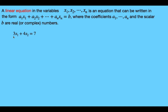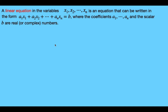The coefficient a sub 1 is equal to 3, and the second coefficient a sub 2 is equal to 4, and the 7 here is what b is representing in this notation. Here's another example of a linear equation, just so you can get the idea of what they look like.